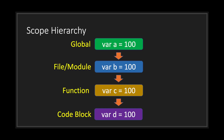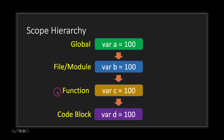Now let's take a look at scope hierarchy. Scopes do have hierarchies — at the top, the global scope is the highest level. As we move down, file/module/class is second highest, our functions are beneath class scopes, and our code block scope is at the bottom.